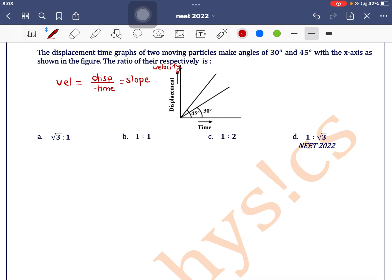Now what is the formula for slope? Slope formula is written as tan theta, so we can write velocity is equal to tan of theta. So v1 by v2 is equal to tan theta 1... what is the angle for line number 1?